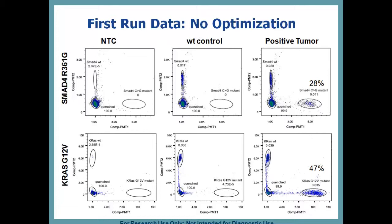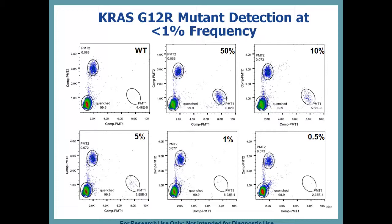The last one to show is the KRAS G12R mutant assay. This was one of the better-looking probes, so we did a quick dilution series to see what the sensitivity might be. Going from 50% down to 10, 5, 1, and possibly as low as 0.5%. I would be comfortable calling 1% with this assay, and again, at this point no major optimization was attempted.